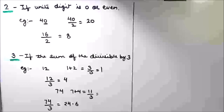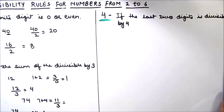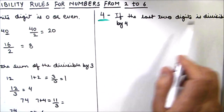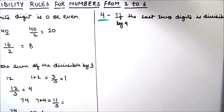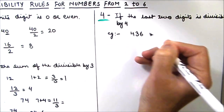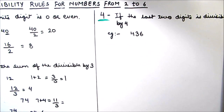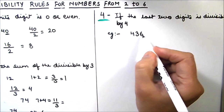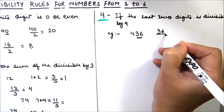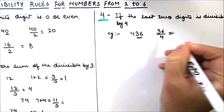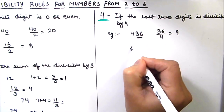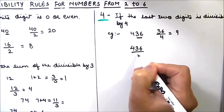Let's move on to number 4. The divisibility rule for number 4 is: if the last two digits are divisible by 4, then the number is divisible by 4. For example, let's take the number 436 and check. The last two digits are 36, and 36 is fully divisible by 4 — 4 times 9 is 36. Hence 436 should be divisible by 4.